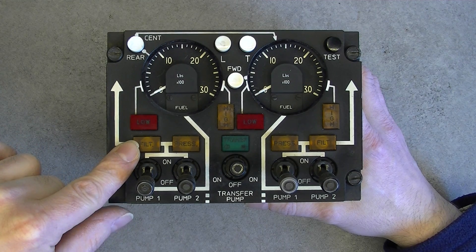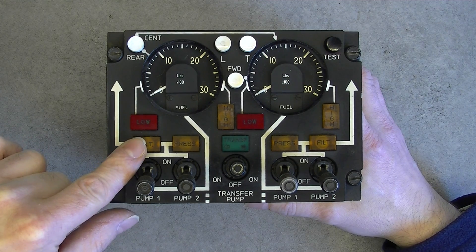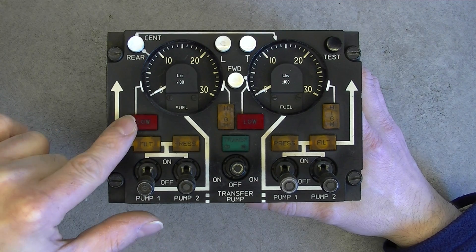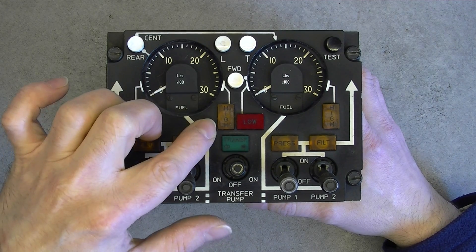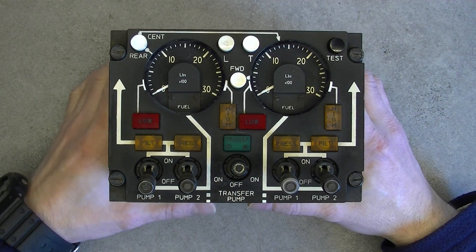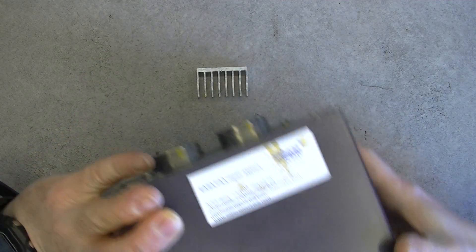We have caution lights, it seems for filter, fuel filter, pressure, low fuel, high fuel, and same on the other side. That is all for the front panel.